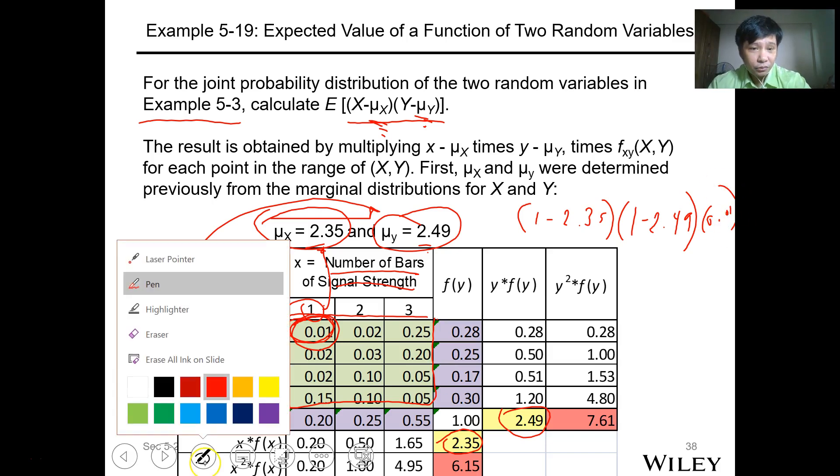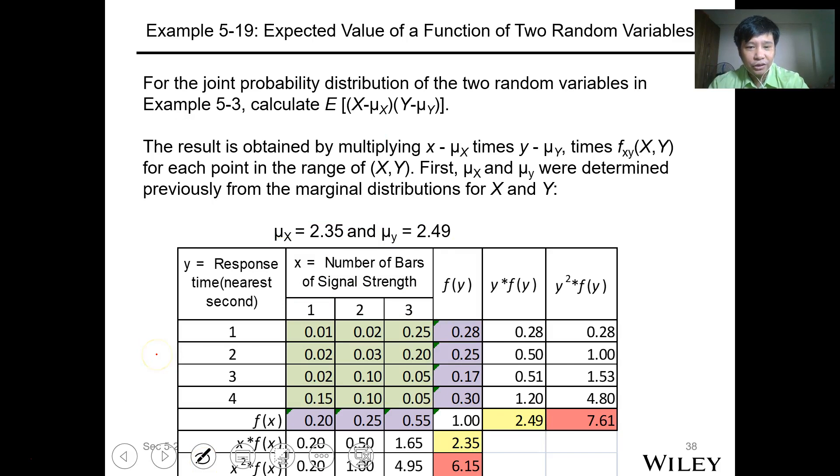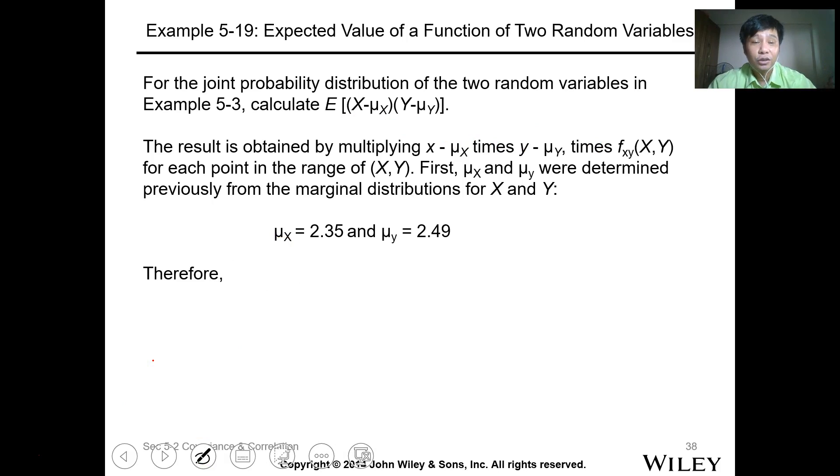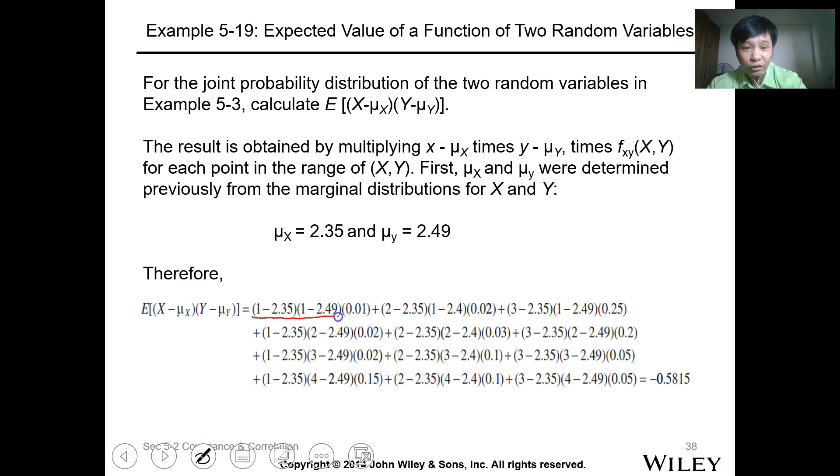How many data points do we have? 1, 2, 3, 4, 5, 6, 7, 8, 9, 10, 11, 12. So we have 12 data points. So 12 expressions like this times the probability. This is what we're getting, and this is our h(x,y).